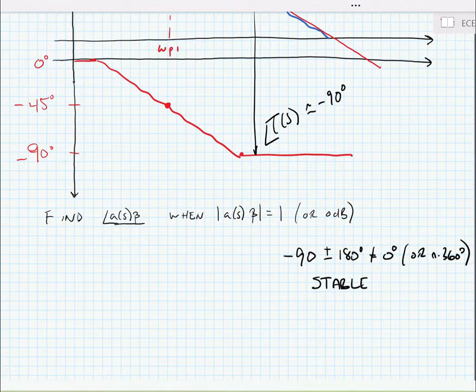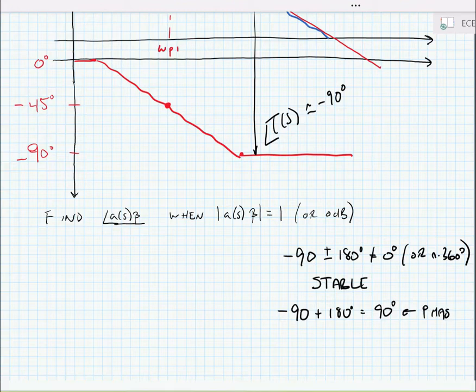We can look at phase shift at that frequency plus 180 degrees is equal to 90 degrees. This is our phase margin. In other words, we're 90 degrees away from a condition where we would have 0 degrees of phase shift or a multiple of 360 degrees of phase shift, which would mean that we would have positive feedback. This means we have 90 degrees of phase margin to get to that number.